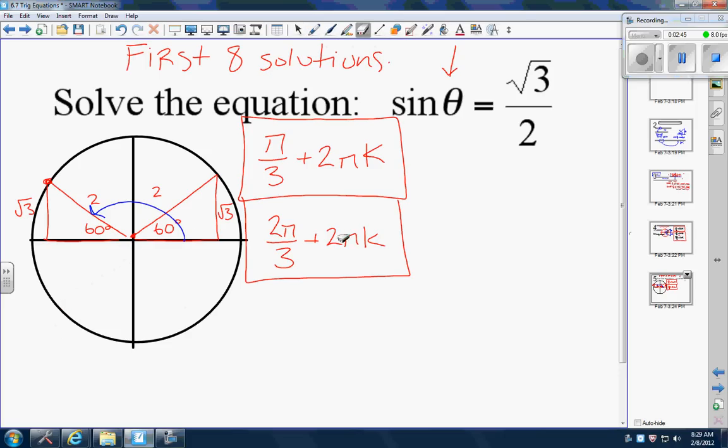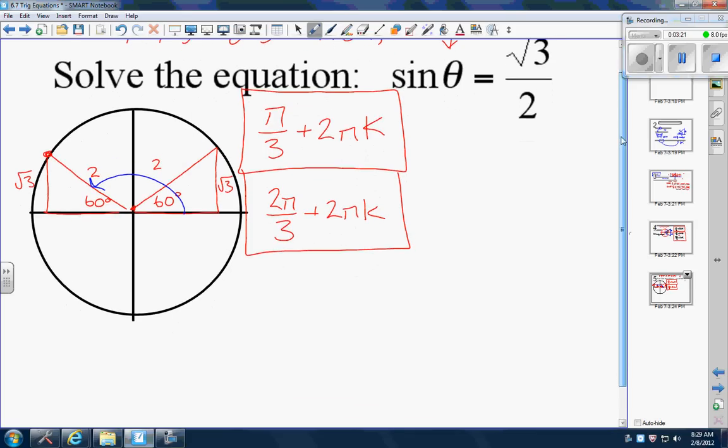When you're doing these sine and cosine ones, you're going to have two equations because of the different way the quadrants work. Tangents are unique - if a tangent's positive here, tangents are also positive here, and those are only pi apart. But for sines and cosines, you've got to have two equations. There's our general formulas.